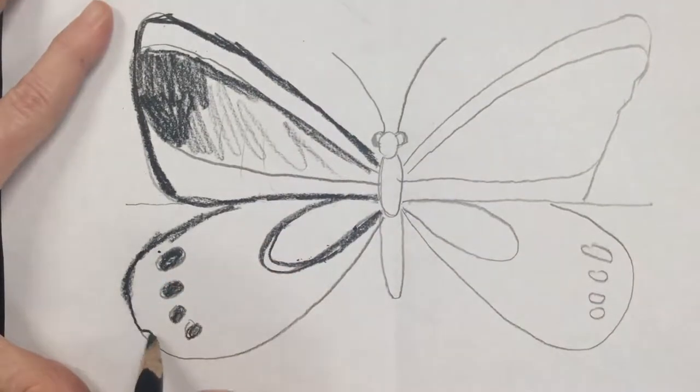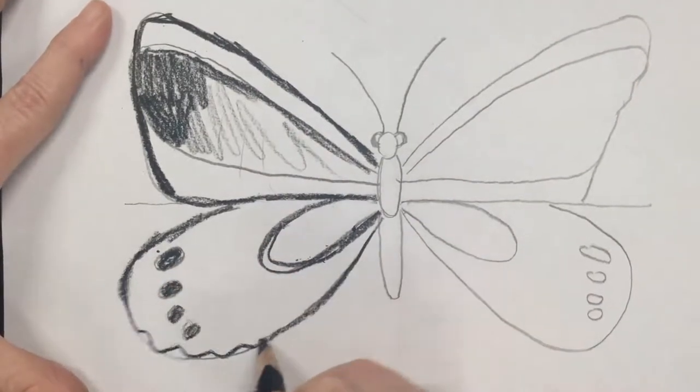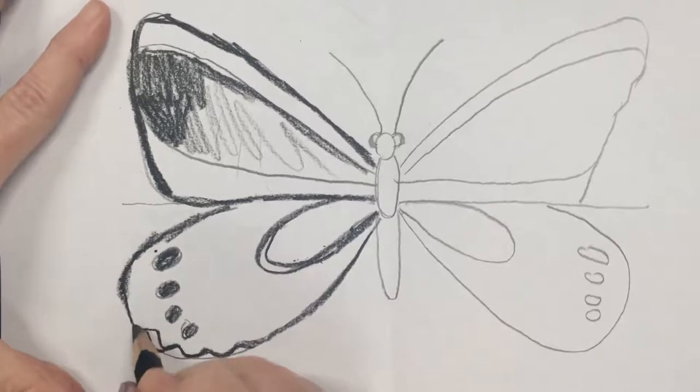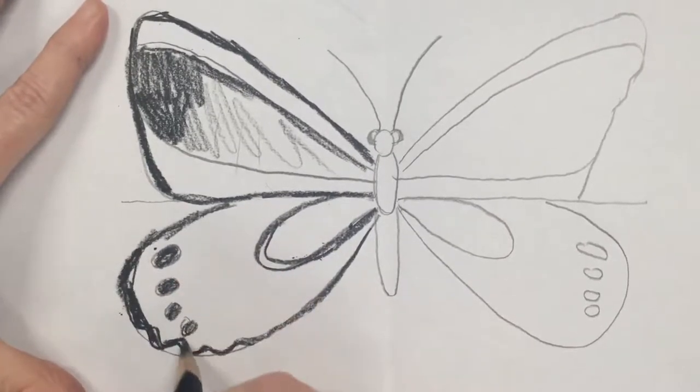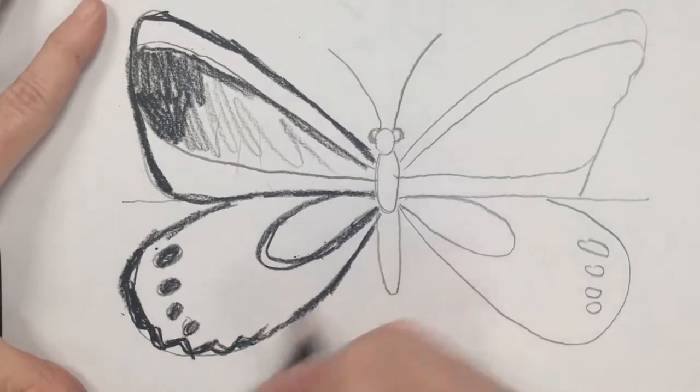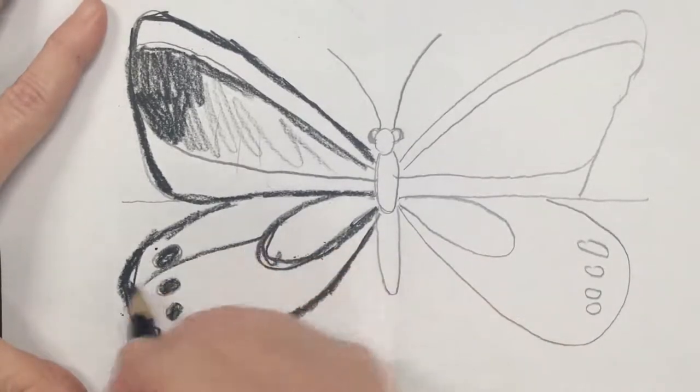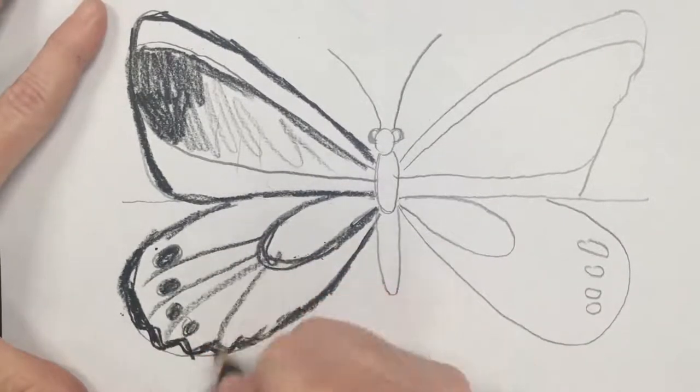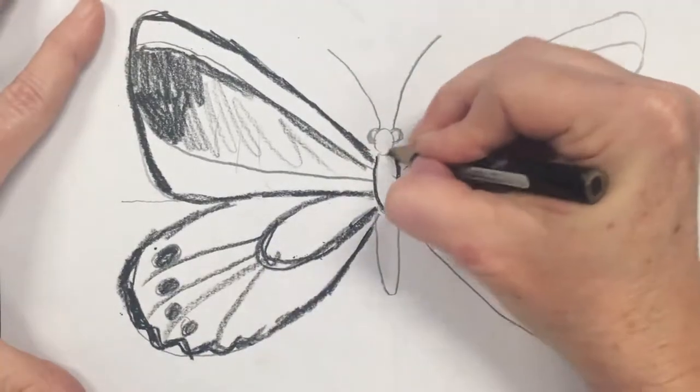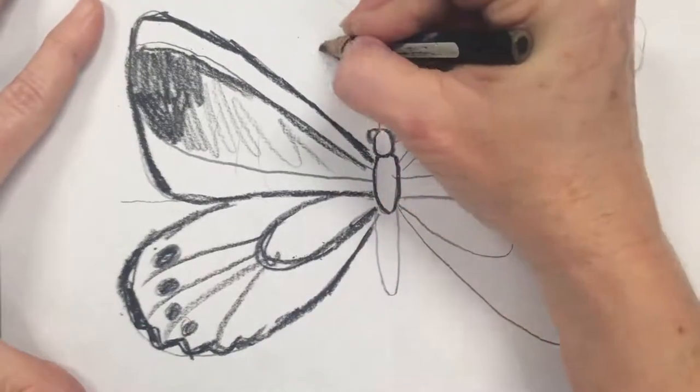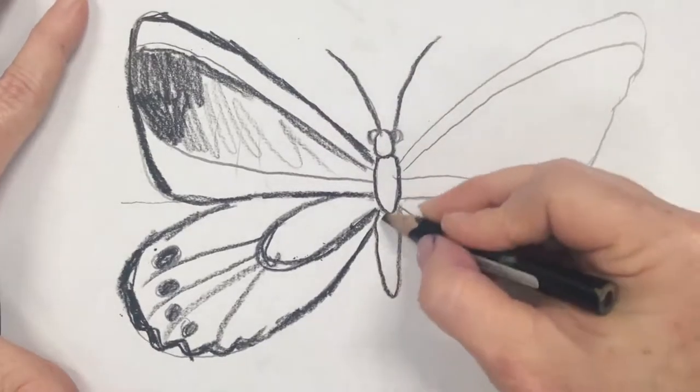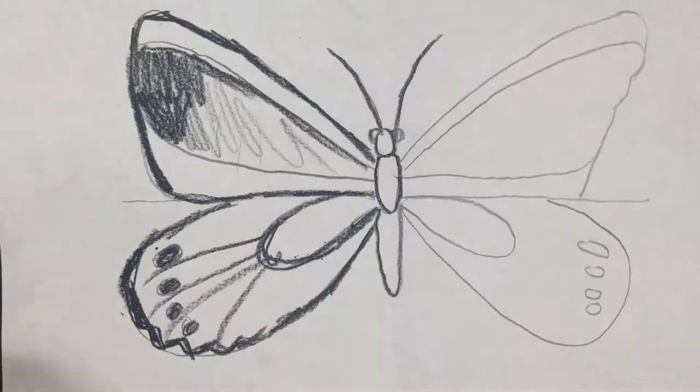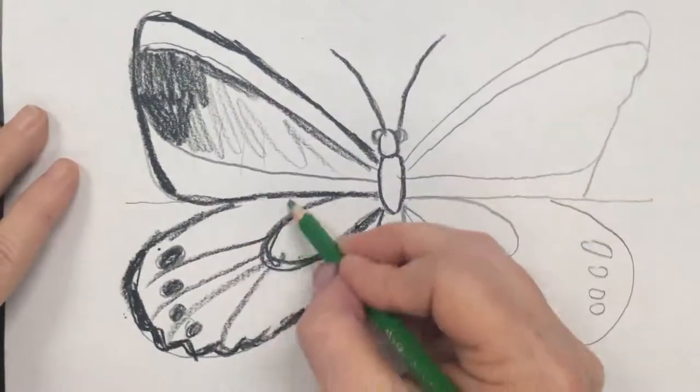Down here do a wiggly line, make that nice and thick too. Just do the same on the other side, you can do some lines going in between those dots. Body and eyes go over in black, you can color this bit yellow, and the rest green.